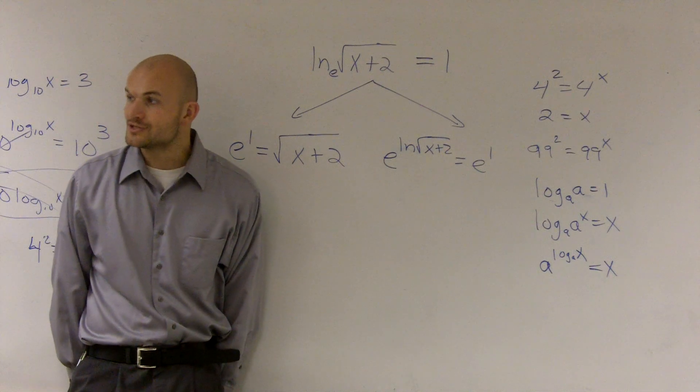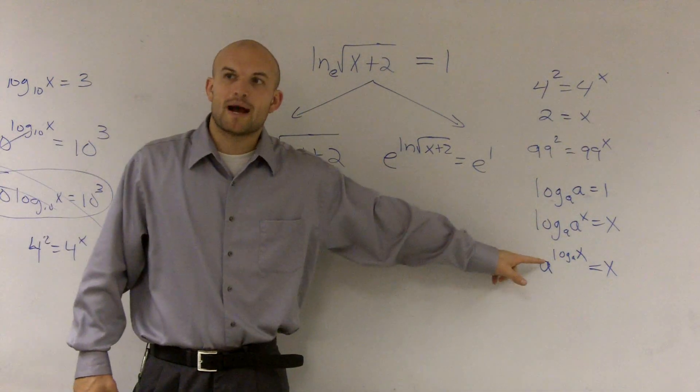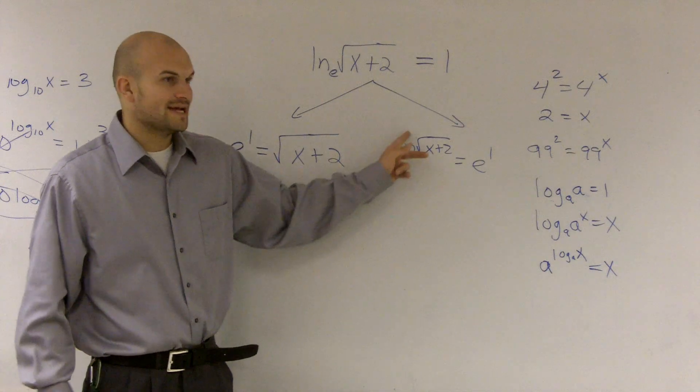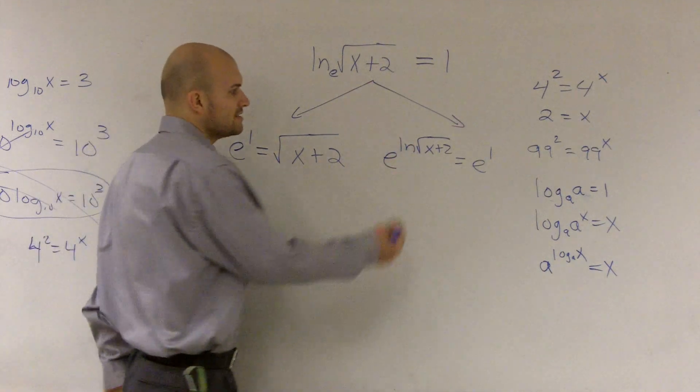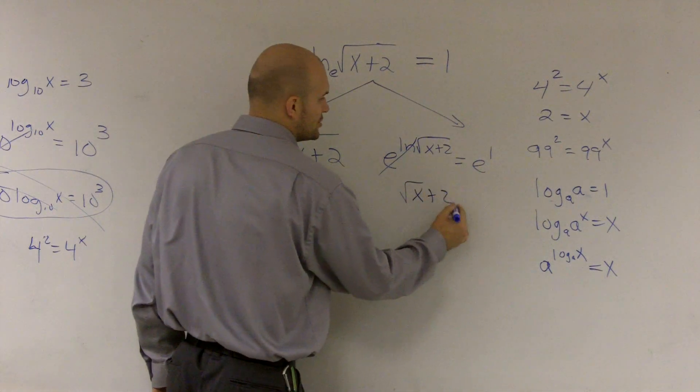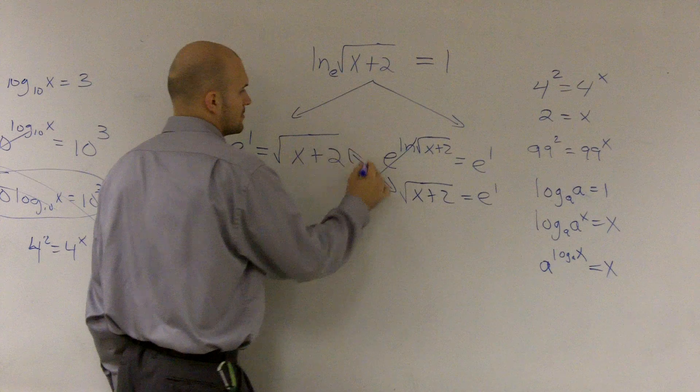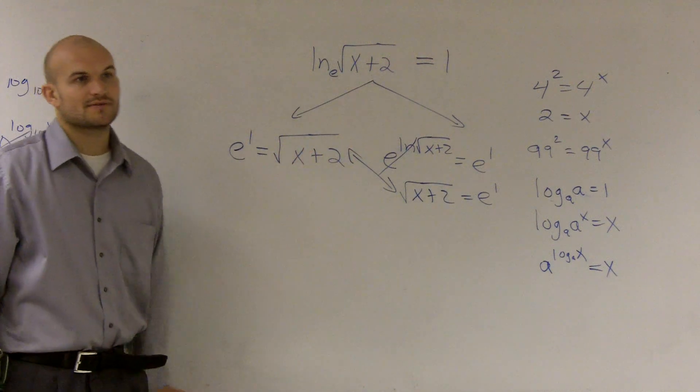Well, the reason I want to do that is I'm manipulating my equation so I can use this property, because e raised to the ln, which is base e, is going to cancel out. So I'm left with square root of x plus 2 equals e to the first. It's the exact same as you did in the first one.